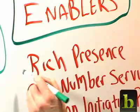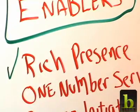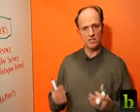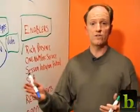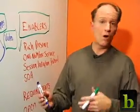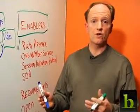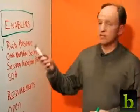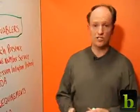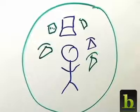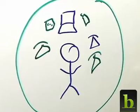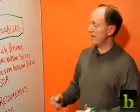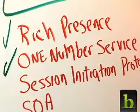It starts with rich presence. Rich presence allows you to see the aggregate status of the user, so you can understand whether they're in the office, whether they're away from their desk, whether they're on the phone in a meeting, etc. It also includes telephony presence so that you can see whether they're on the phone regardless of what phone they're using.